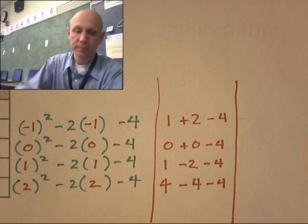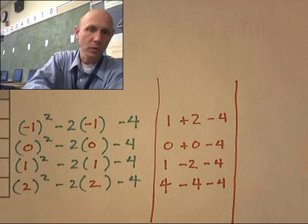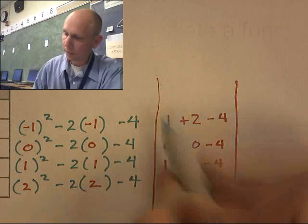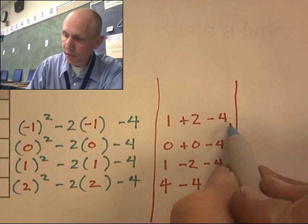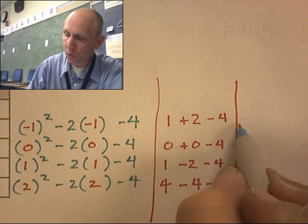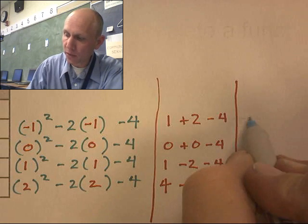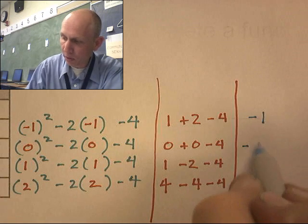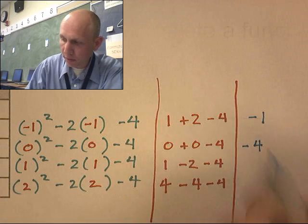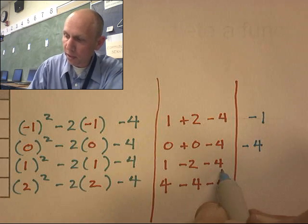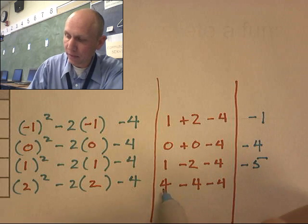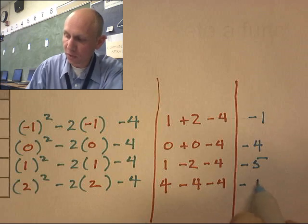Just slowing it down. For x = -1: 1 plus 2 minus 4 equals negative 1. For x = 0: 0 minus 4 equals negative 4. For x = 1: 1 minus 6 equals negative 5. For x = 2: 4 minus 4 is 0, minus 4 is negative 4.